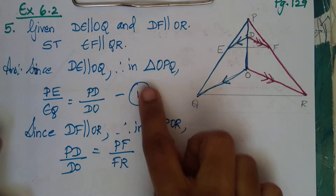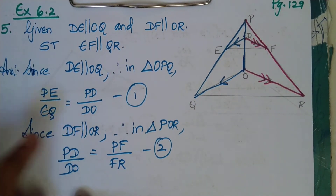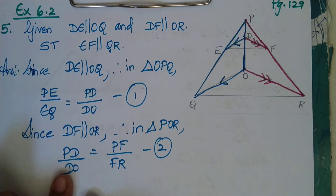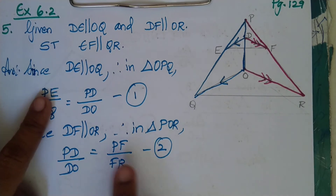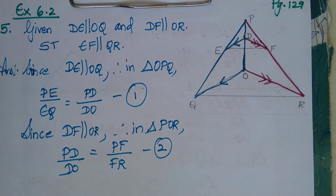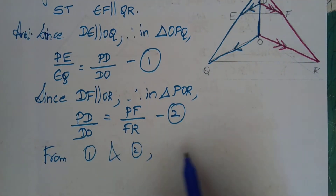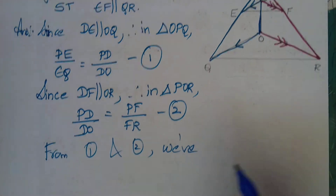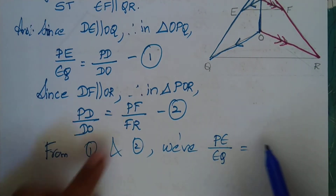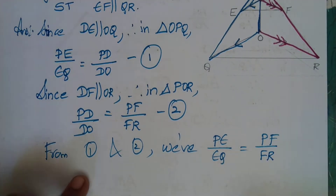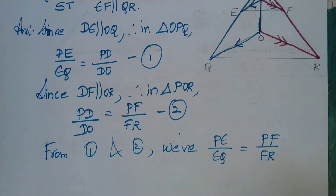From equations one and two, both are equal to PD by DO. So automatically these two are equal to one another. Therefore, from equations one and two: PE by EQ is equal to PF by FR. This is equation number three.